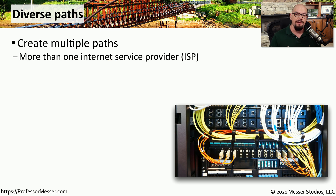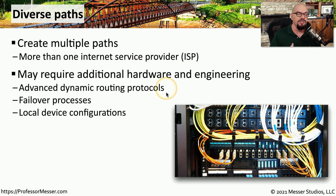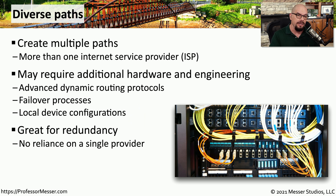In very large data centers, you may have multiple paths to get between point A and point B. A good example is having multiple internet service providers in and out of the data center. This way, if you lose connectivity to one ISP, you can use the redundant or diverse path to the secondary ISP to maintain uptime. This involves more than simply installing a separate network connection — we have to consider the dynamic routing protocols in place, ensure there are failover processes between the two ISPs, and make sure local devices are configured to understand there are two paths to the internet. If you properly engineer these diverse paths, you'll have redundant connections to multiple ISPs and be able to failover from one to the other.